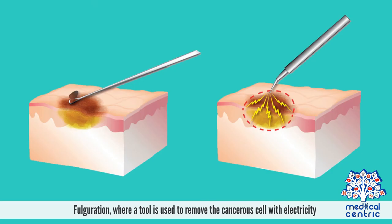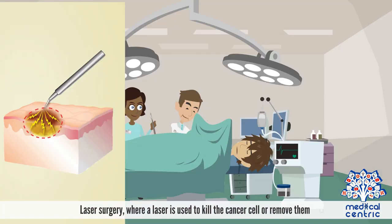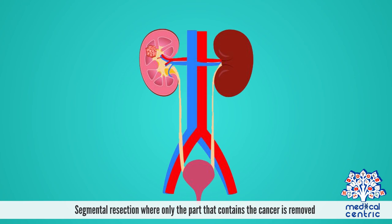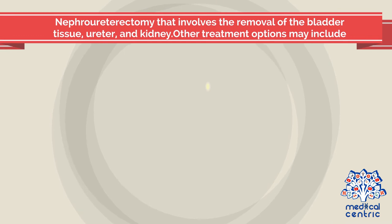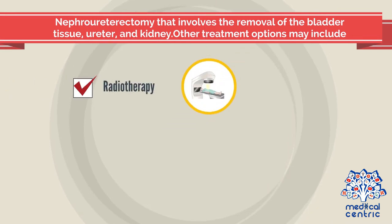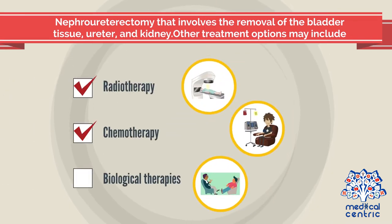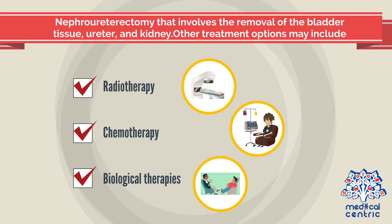Current treatment for the condition includes fulguration, where a tool is used to remove the cancerous cells with electricity; laser surgery, where a laser is used to kill or remove the cancerous cells; segmental resection, where only the part that contains the cancer is removed; and nephroureterectomy, which involves the removal of the bladder tissue, ureter, and kidney. Other treatment options may include radiotherapy, chemotherapy, and biological therapies.